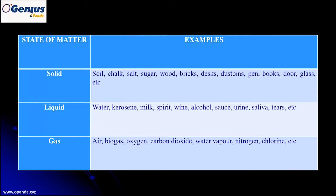For solids, you can take the example of soil, sugar, chalk, wood, bricks, desks, and so on. You can pause the video to think about more examples. For liquids, you know water, kerosene, milk, sodas, and so many liquids. And for gases, we know air, biogas, carbon dioxide that we breathe out, water vapour, and nitrogen, which is the main component of air.